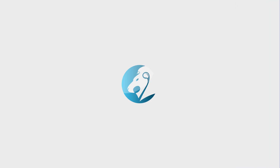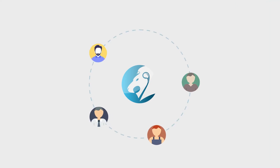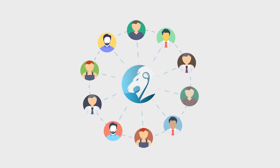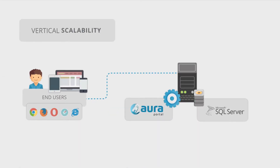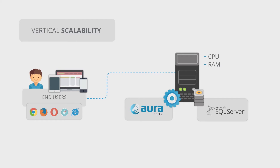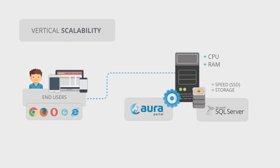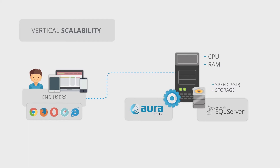Scalability: when the workload in an Oroportal installation increases or the number of users increases considerably, the following scaling options are possible. Vertical scalability consists of improving the server hardware with a more powerful CPU and adding more RAM. Additionally, you can improve the speed of hard drives, for example with SSDs, and their storage capacity.